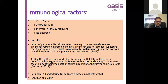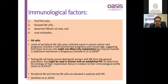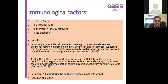Regarding natural killer cells, peripheral and uterine NK cells were studied in many studies with conflicting results, so no guideline has come regarding measurement of NK cells in RIF patients. A study by Yamada et al. in 2003 stated that raised NK cell levels might not affect only implantation but may be involved in additional mechanisms responsible for successful pregnancy. Sachs et al. said NK cell measurement did not distinguish women with RIF from general population. Peripheral and uterine NK cells are elevated in cases of RIF as seen in a study by Santinal et al. in 2014.